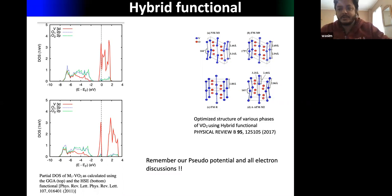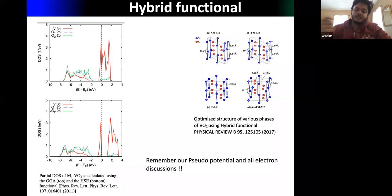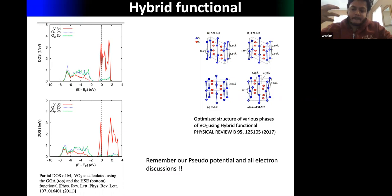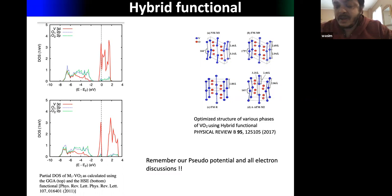However, there was a problem: if you do spin-polarized calculations you can again end up with a metallic solution. It turned out to be a problem with the pseudopotential. Later, people did calculations with a good hard pseudopotential and successfully described all the phases of VO₂. So hybrid functionals can be a good choice but they are very expensive.